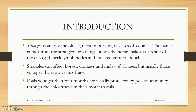Strangles is among the oldest and most important diseases of equines, mainly affecting the neck lymph nodes. The breathing sounds will be different and the guttural pouch and the retropharyngeal lymph nodes will be affected. Strangles can affect horses, donkeys, and mules of all ages, but usually those younger than 2 years will be affected more.